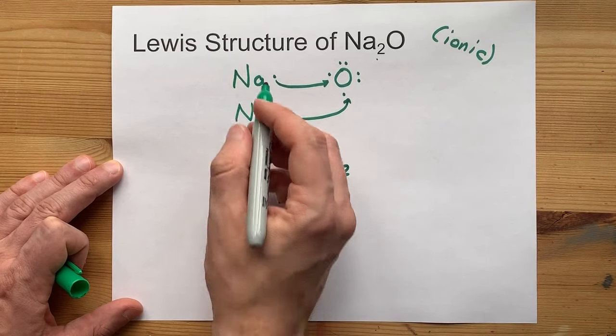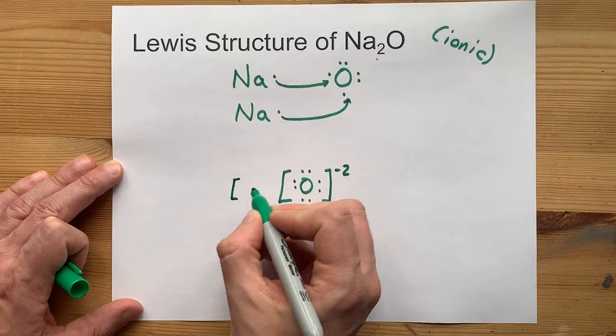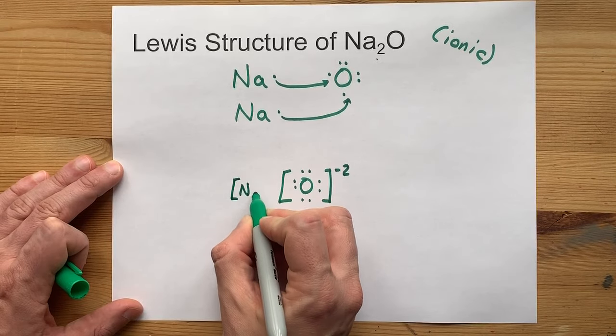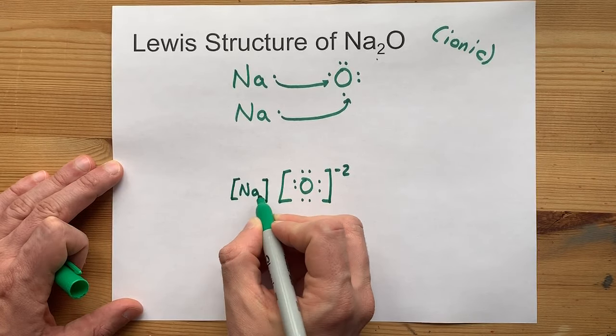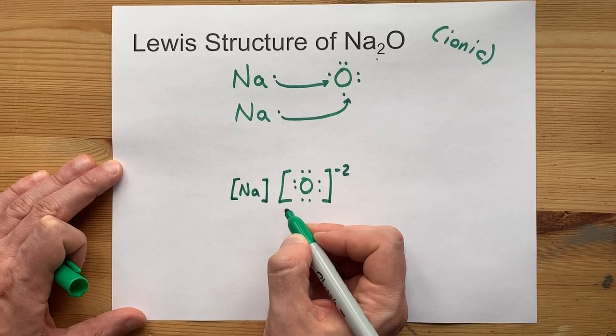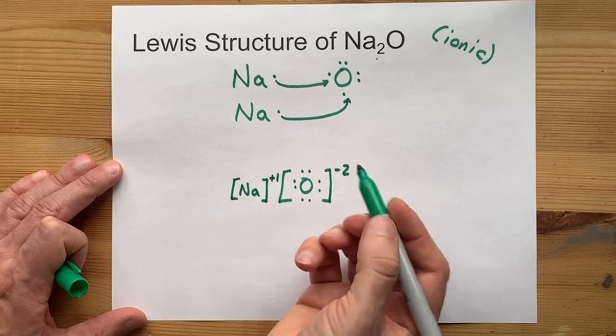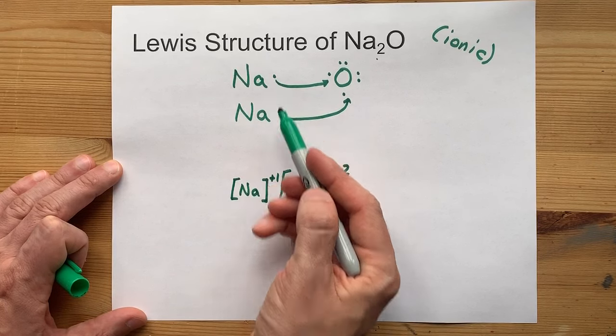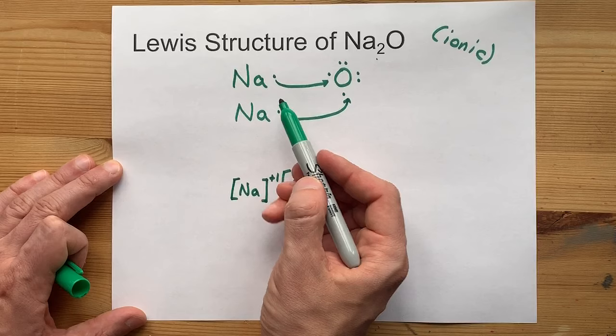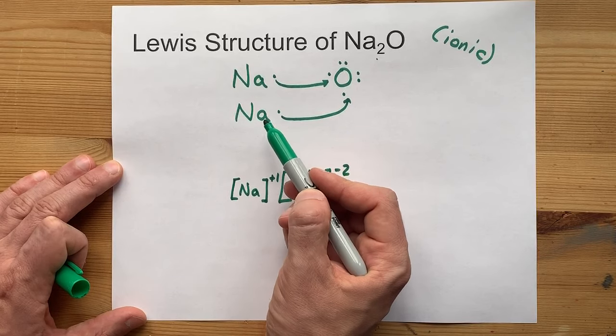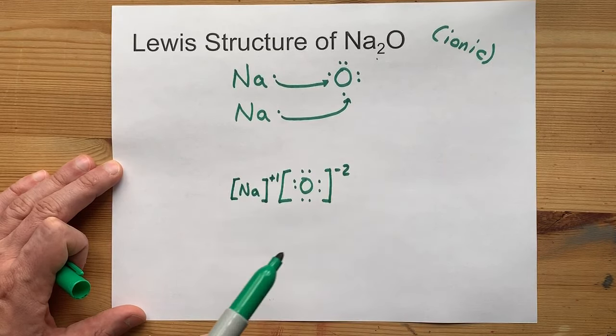Great. Now, the Na's had 1 valence electron around it, and now it has none, so don't write any dots in there. 1 fewer electrons means it has a charge of plus 1. I know it's weird that losing something gives you a positive charge, but you're losing a negative charge. 2 negatives make a positive.